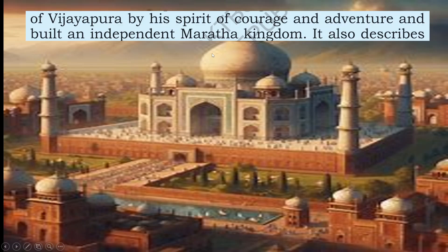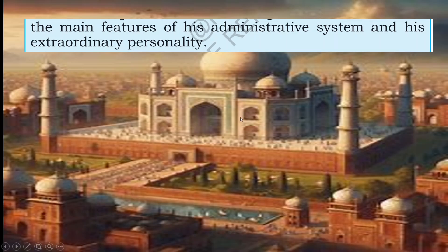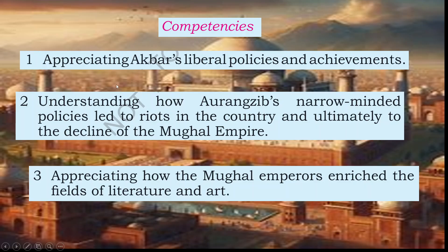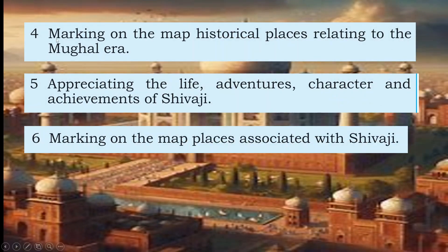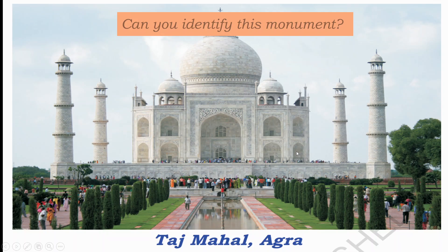The chapter describes how Shivaji built an independent Maratha kingdom and the main features of his administrative system. Key competencies include: appreciating Akbar's liberal policies, understanding how Aurangzeb's narrow-minded policies led to unrest and the decline of the Mughal empire, appreciating the Mughal emperors' contributions to literature and art, marking historical Mughal places on a map, appreciating the life and achievements of Shivaji, and marking places associated with Shivaji on a map.